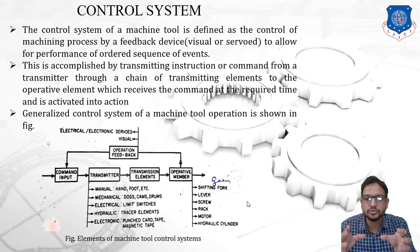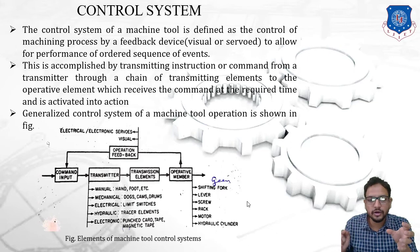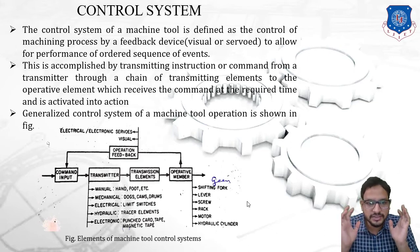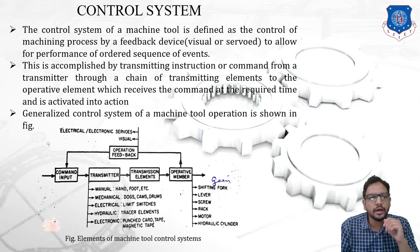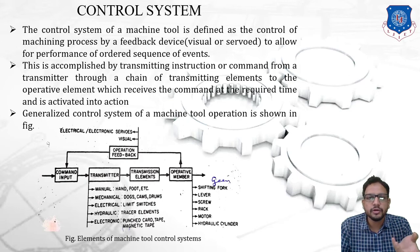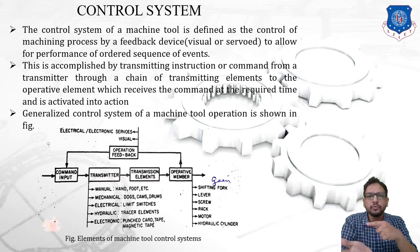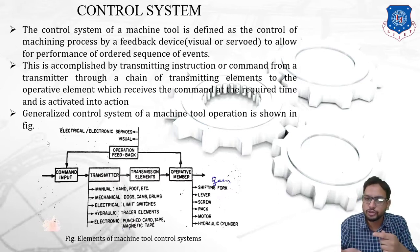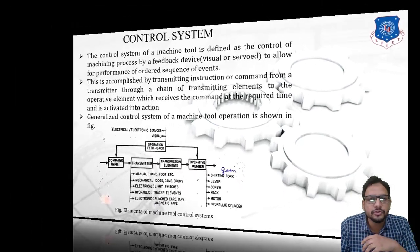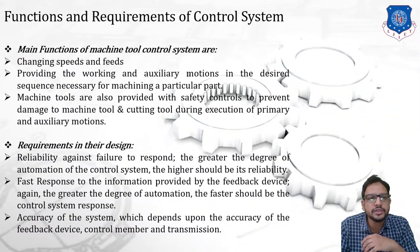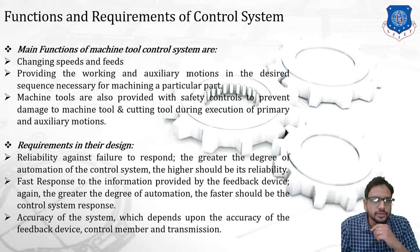Once it has been operated, the operative member is working and we get feedback that the operation has started. This is a general example of a control system. Similarly, we can apply it in the case of a rack and pinion mechanism, in which the pinion is a small gear that rotates and converts rotary motion into the reciprocating motion of a rack.